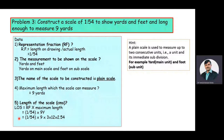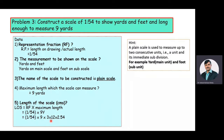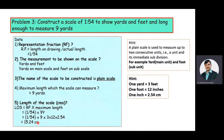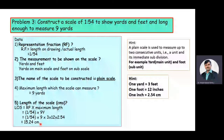The length of the scale value is equal to RF (1 by 54) into 9 yards, converted in terms of feet, then into inches, then into centimeters. That is: 1 by 54 × 9 × 3 × 12 × 2.54. After simplifying, the length of the scale value is 15.24 centimeters. Here, 1 yard = 3 feet, 1 foot = 12 inches, and 1 inch = 2.54 centimeters.